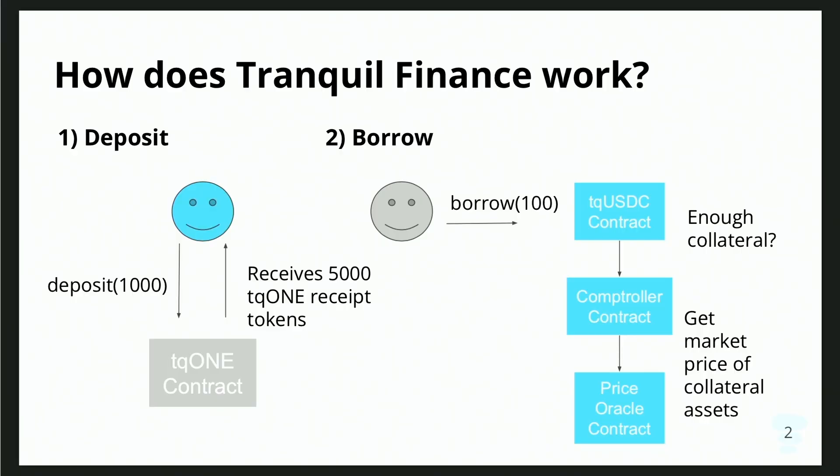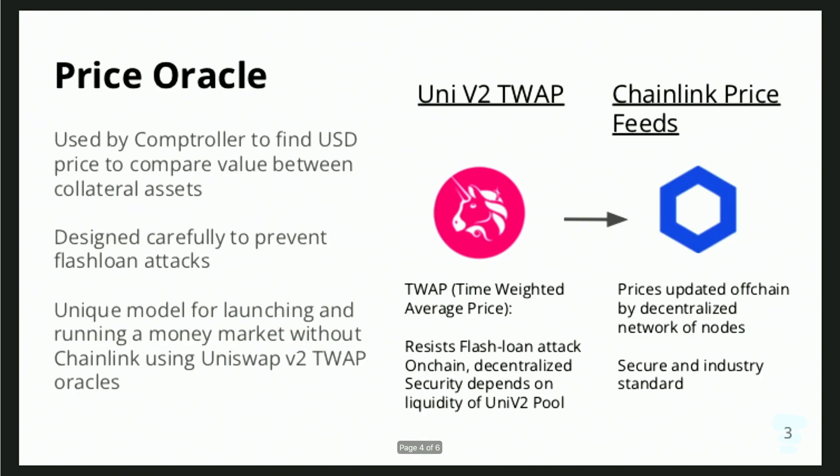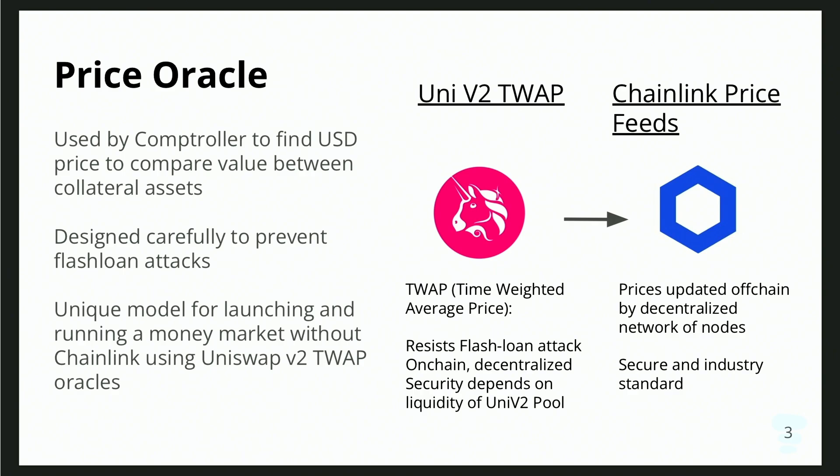A key thing the comptroller contract needs to understand is the price of your assets. Because you're borrowing USDC against assets that might not be USDC — like ONE, Bitcoin, or Ethereum as collateral — the comptroller needs to compare these assets. It converts all your deposited assets to a common base (US dollars) using an oracle contract. The oracle contract is actually the most fragile piece of the whole thing. If you're in DeFi, you've probably heard of the Cream hack or the Aave xSushi hack — these happen if your oracle isn't designed well enough.